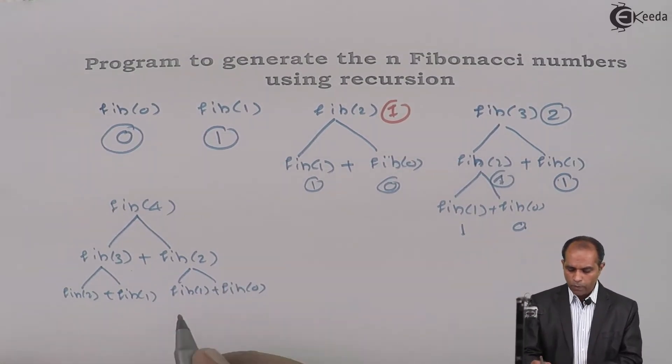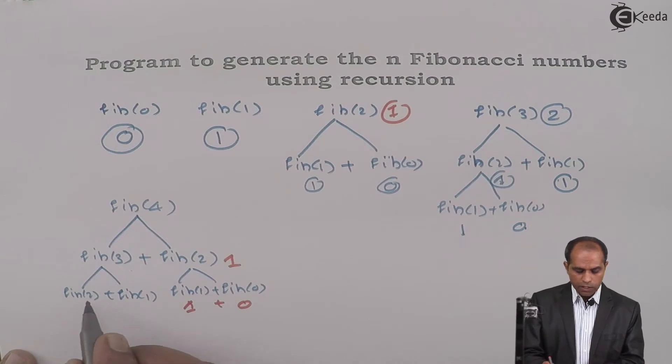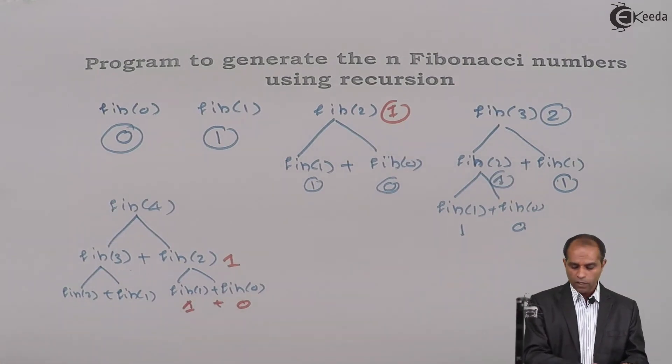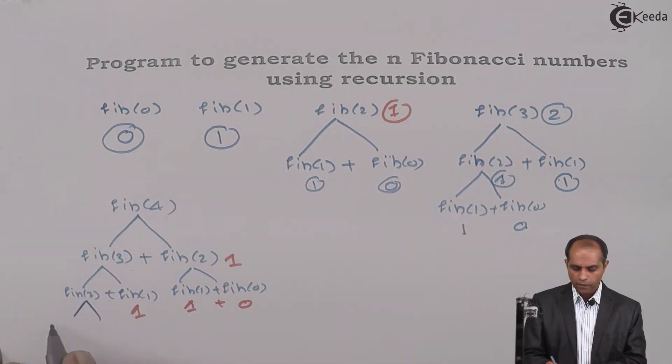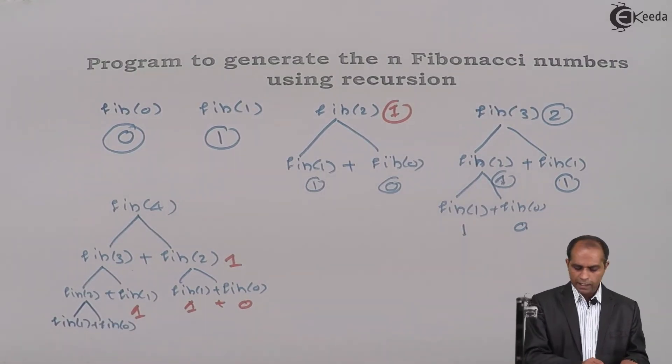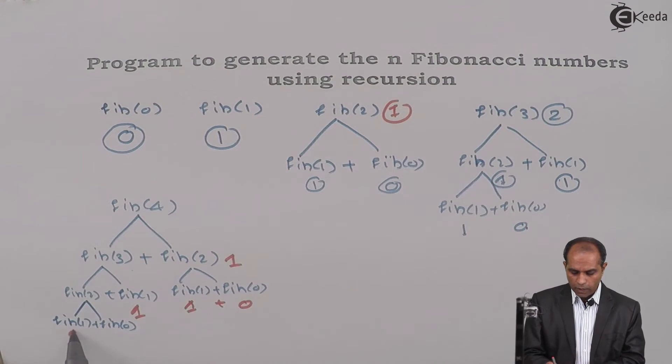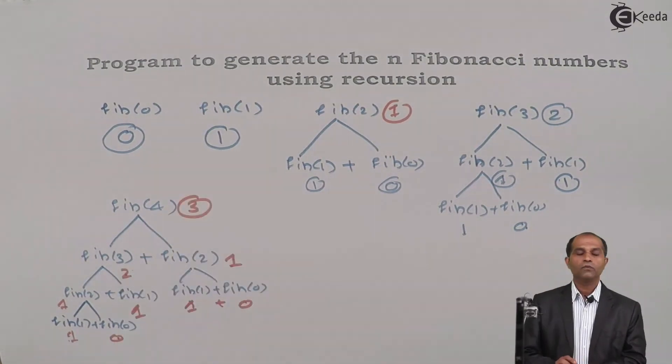Fib of 2 is Fib of 1 plus Fib of 0. I know what is Fib of 1. Fib of 1 is 1 plus Fib of 0 is 0. 1 plus 0 is 1, that goes to this place. This particular tree still gets expanded. Only Fib of 1 is known, that is 1. So Fib of 2 gets further expanded. This is Fib of 1 plus Fib of 0. Fib of 1 is 1, Fib of 0 is 0. 1 plus 0 is 1. So 1 plus 2 is 2, 2 plus 1 is 3.